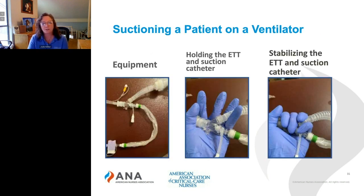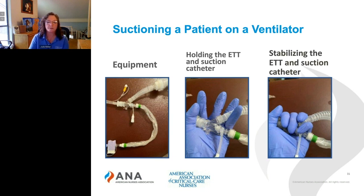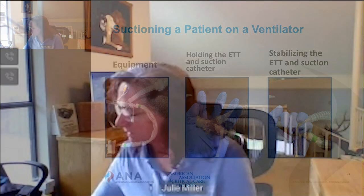To suction a patient on a ventilator, I'll go over the equipment and then demonstrate. You'll have inline suction — visible toward the bottom of the picture on screen. The ventilator tubing going to the machine is at the top, and the endotracheal tube is to the left where the subglottic suction — the yellow part — connects. The middle image shows how to hold it, and I'm going to demonstrate that right here.